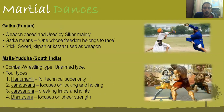Then you have Ghatka from Punjab, mainly used by Sikhs. Ghatka means 'one whose freedom belongs to their race' — they get what they deserve. The weapons used in Ghatka include a stick, a sword, a kirpan, or a Qatar. Qatar in Punjabi refers to a sword or stick.